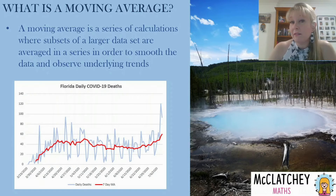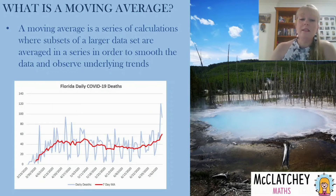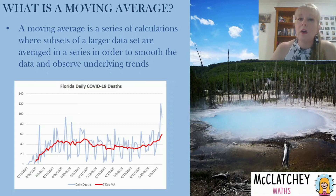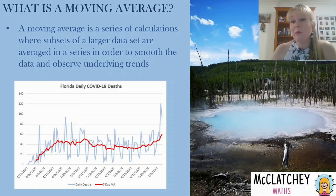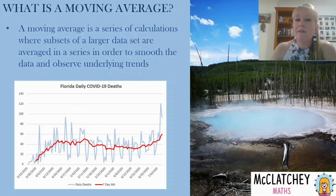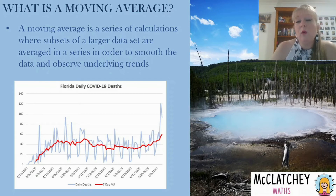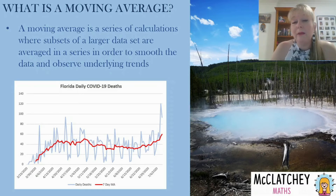Here we can see another example where someone has used a seven-day moving average on COVID-19 deaths in Florida. You can see there are these big changes from day to day — it's hard to see what the trend is — that's the underlying light blue line with the raw data. But once it's been smoothed out, it sits around the middle as you would expect an average to do. And you can see that while there was an initial growth in those deaths, it did flatten out and started to decline a little bit, and then it started to grow a little bit again towards the end in those last couple of weeks.